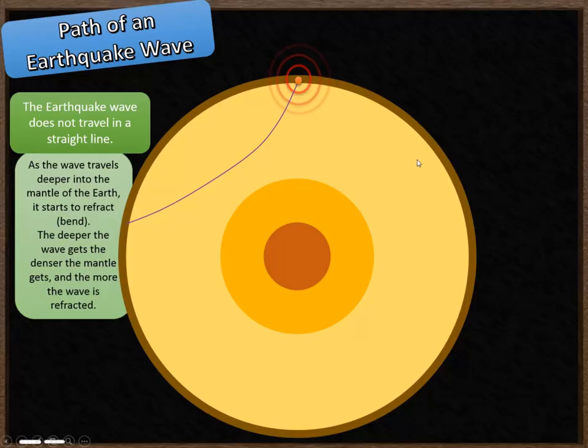As the wave travels deeper into the mantle of the Earth, it starts to bend or refract. So the closer it gets to the centre of the Earth, the more it bends away. And the reason why that is, is because as the wave gets deeper, the mantle becomes more dense. Increasing density is going to cause the earthquake wave to bend and refract away from the core of the Earth. So the deeper the wave gets, the denser the mantle gets, and the more the wave is refracted.